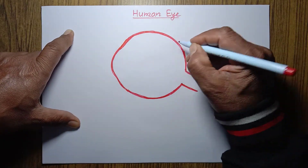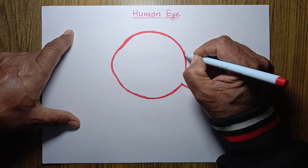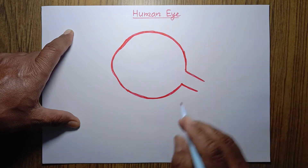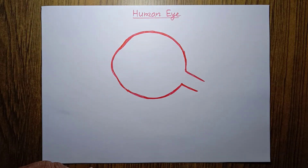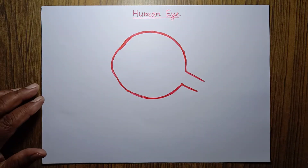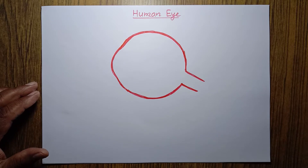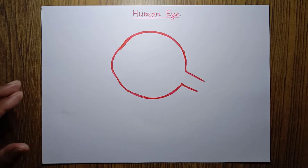This is the outermost layer of our eye. Now let's talk about the second layer. I'm going to make the second layer — look at this.